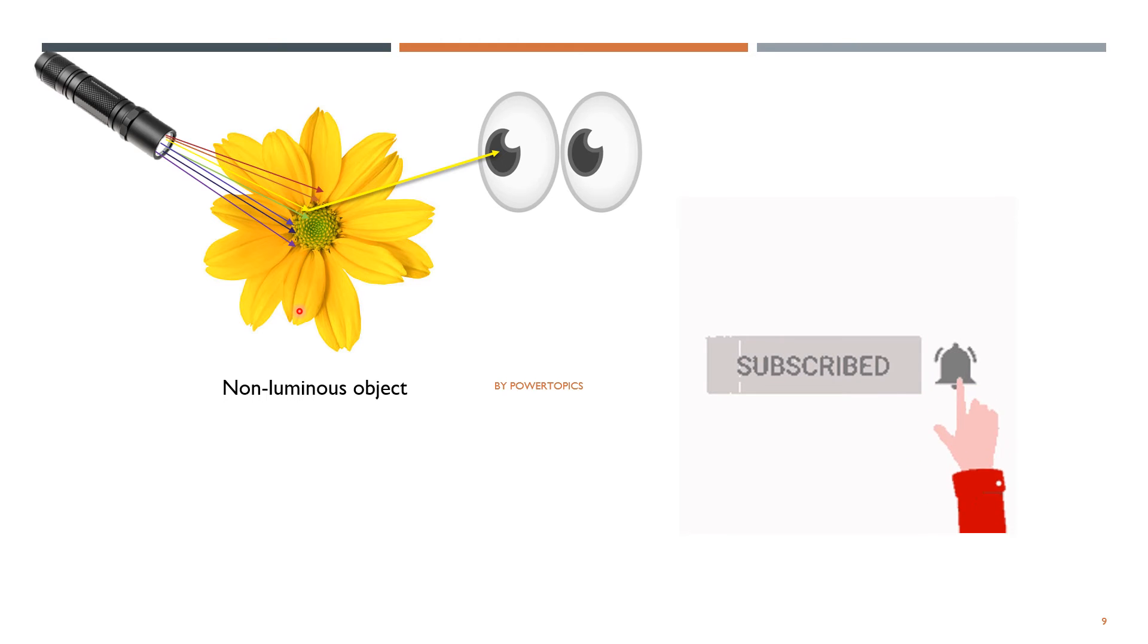When you look at a non-luminous object, you see the light that is reflected from the object. Non-luminous means the object does not emit its own light. Look at the flower in the picture. The flower is seen in white light. The flower looks yellow because it reflects only yellow light. The flower absorbs the other six colors in the white light. This is shown in the diagram.